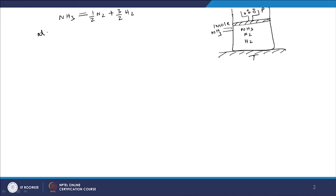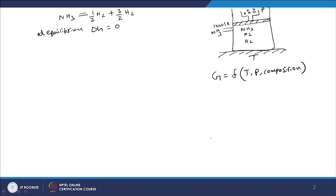What will be the composition of this gas mixture for the given temperature and pressure? That is what we would like to know, and that is what we can achieve from equilibrium thermodynamics. For this reaction at equilibrium, delta G should be equal to zero. The Gibbs energy is a state function which depends on temperature, pressure, and the composition of the system. Here we are looking at this reaction at constant temperature and constant pressure, so we are only looking at what composition at equilibrium the system wants to have.